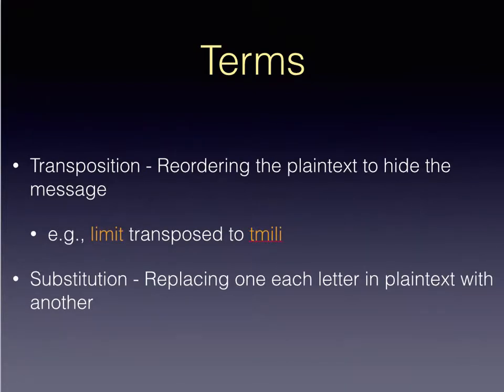Transposition is one way of ciphering — reordering the plaintext to hide the message. Obviously this is not secure, but it is a term you need to know. Substitution is replacing one letter in plaintext with another — you might replace a B with a C or a B with a Z. Because there's very little entropy in a substitution cipher, it can be very easy to get back to the plaintext.